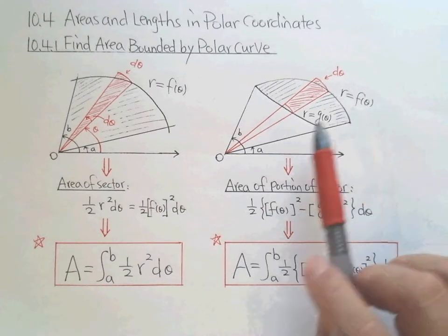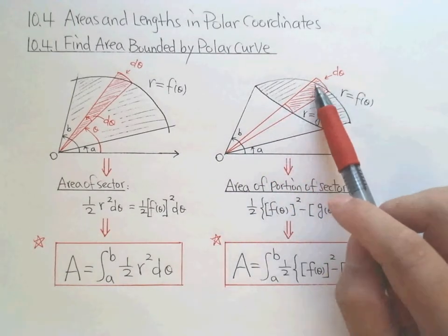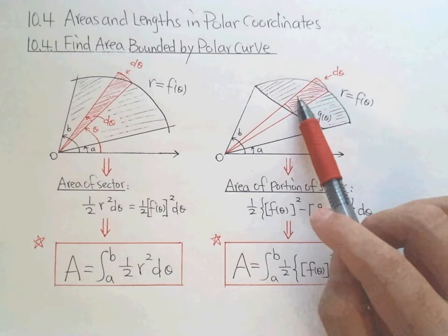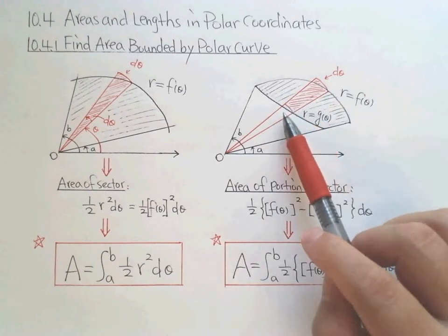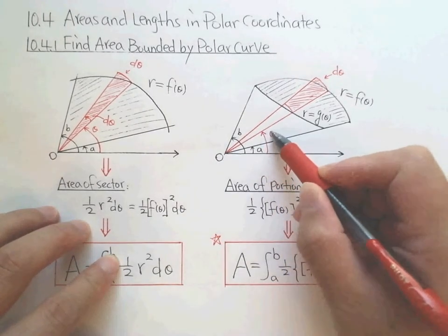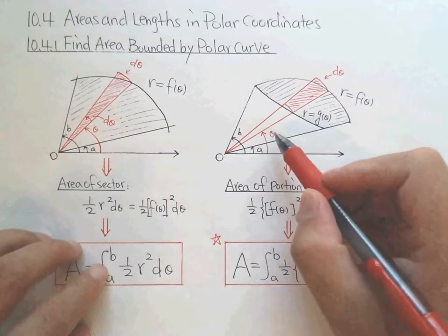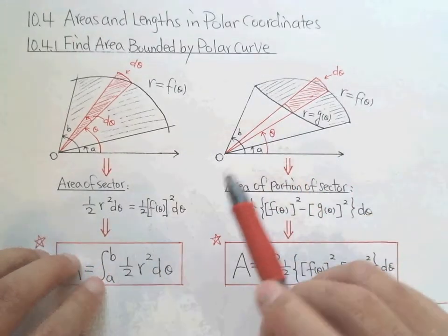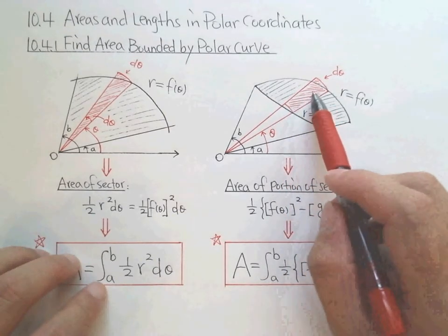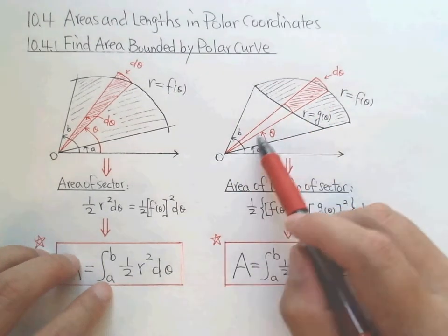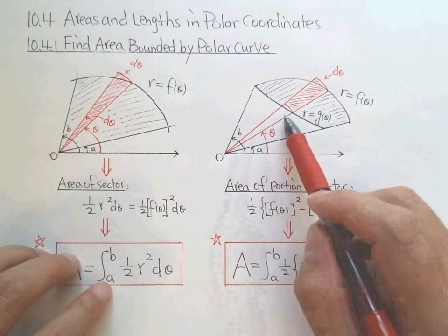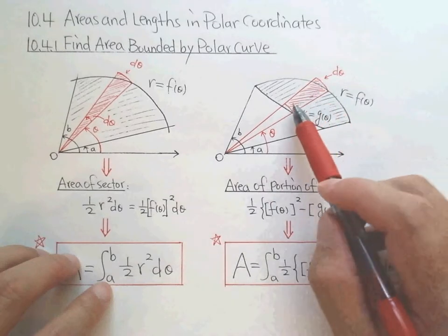We cut the variable θ into pieces. Each piece can be approximated. If I cut at θ with increment dθ, we have a small area. This area can be approximated by a portion of a sector — it's a big sector with the top piece cut away. All we need to do is take the big sector and subtract the small sector to get the portion of the sector.